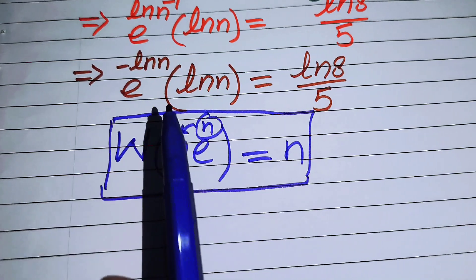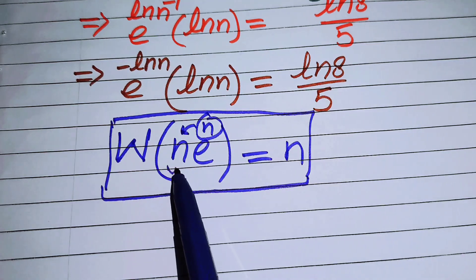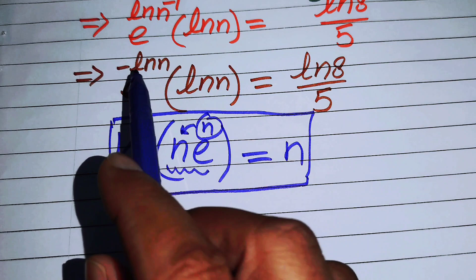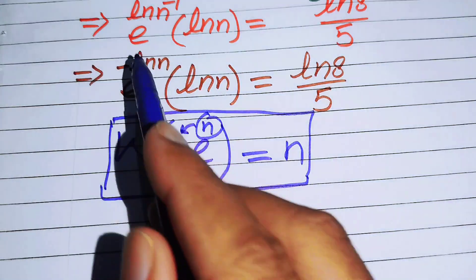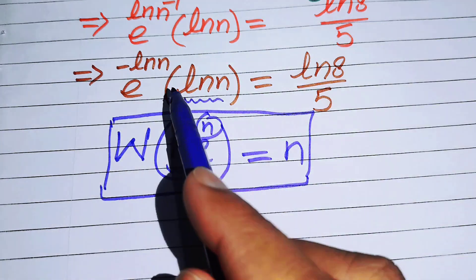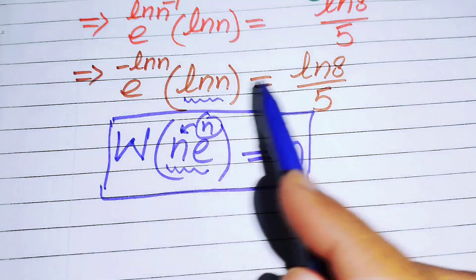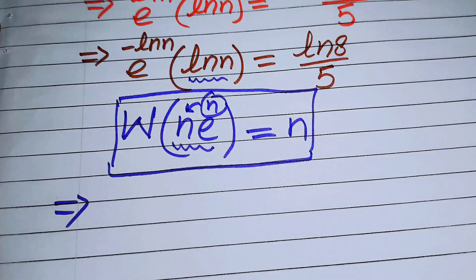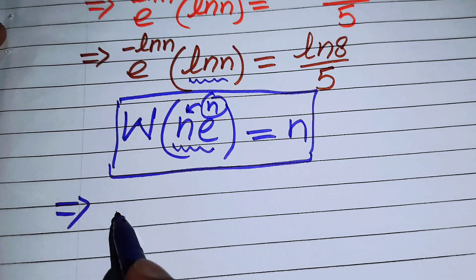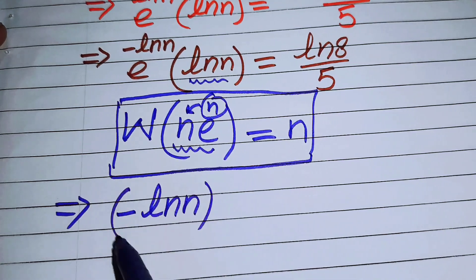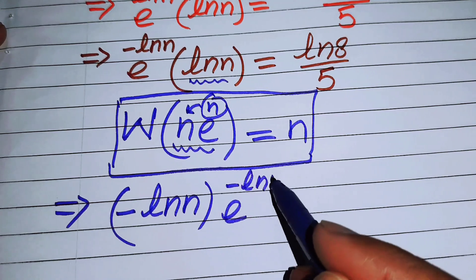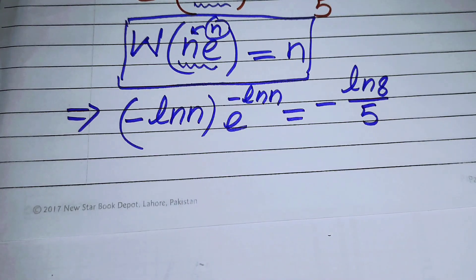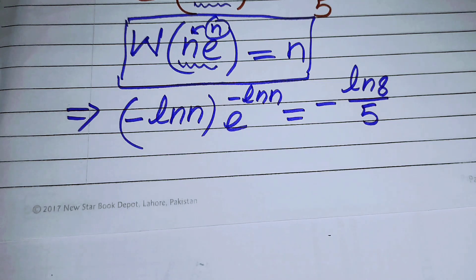We now convert our equation into the standard form of Lambert W. The exponent of e is −log(n), and we need to multiply that exponent by log(n). To get the standard form, we multiply both sides by −1, obtaining: (−log(n))·e^(−log(n)) = −log(8)/5.